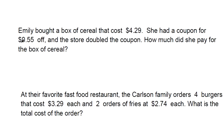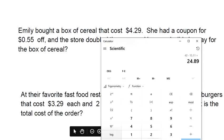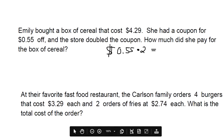So let's first find out how much money Emily gets to save. We had a $0.55 coupon, but it gets doubled, so times two. So 0.55 times two, that gives us $1.10 that we're saving.